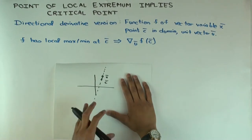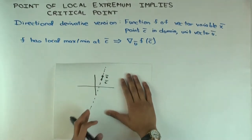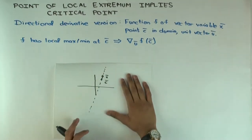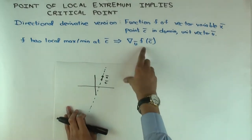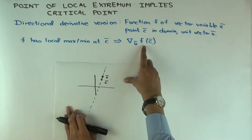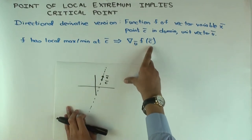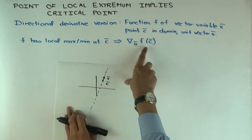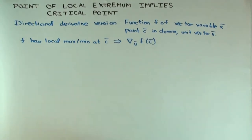You ask: what's the derivative of this function, which is now just a function of one parameter, as you move along this line? That is essentially what ∇ᵤf(c) is — the rate of change in the direction of u at the point C. It's a number, if it exists.